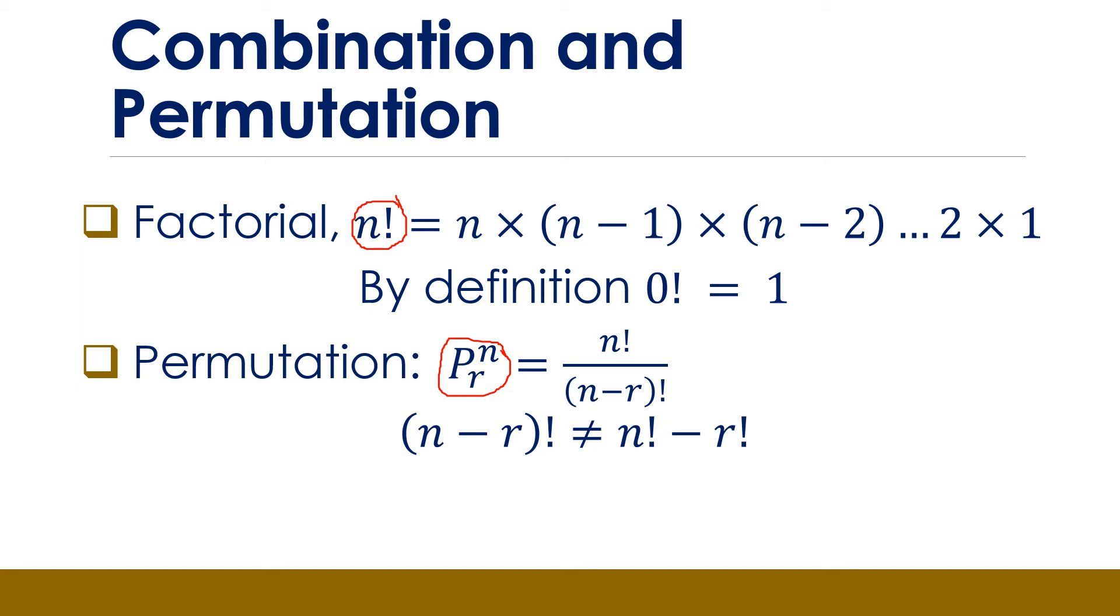Where order of arrangement is not important, then we use combination. The number of ways of selecting R objects from a set of N objects where order is not taken into account is given by N combination R. The latter notation here is also used to symbolize N combination R. Actually, in most econometrics and statistics books, this is the symbol you will find commonly being used. It is not a matrix when it is useless, it means N combination R.